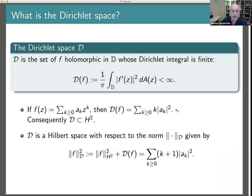The Dirichlet space can be thought of as the set of Taylor series such that σ k|a_k|² is finite. Clearly if this series converges, then the series without the factor k converges as well, which says that if you're in the Dirichlet space, you're also in the Hardy space H², which is just the set of functions such that σ|a_k|² is finite. So the Dirichlet space sits inside the Hardy space, and everything proven for Hardy space functions remains true for Dirichlet space functions.